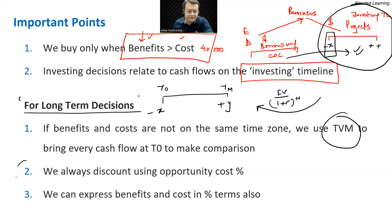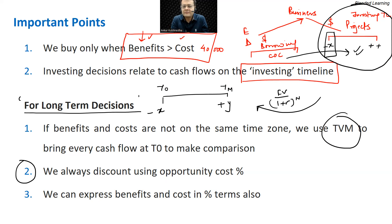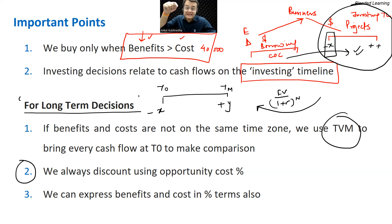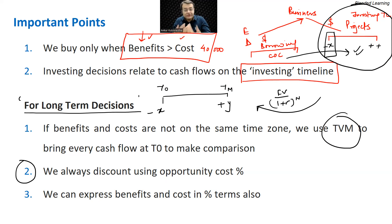For this discounting, we are always going to use the opportunity cost. This is a very strong fundamental of corporate finance — whenever you have to discount any cash flow, always pick up your opportunity cost at that moment. Therefore, we say that decisions are only as good as the moment we take them. Because after six months, if your opportunity cost changes, the evaluation of the project can also change.